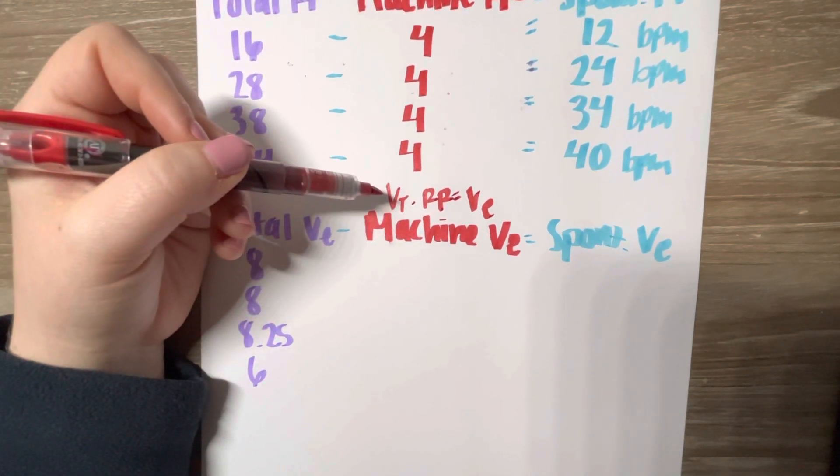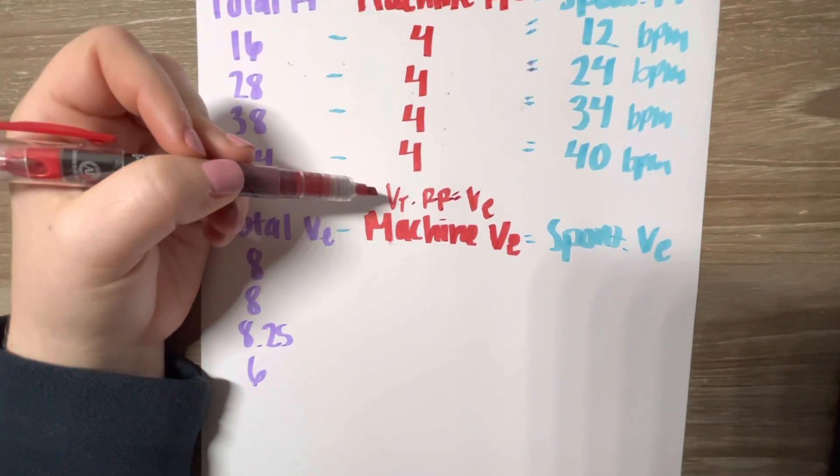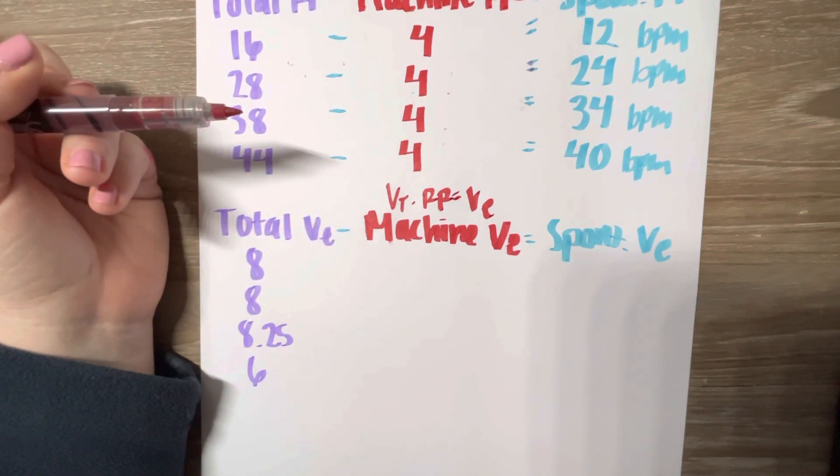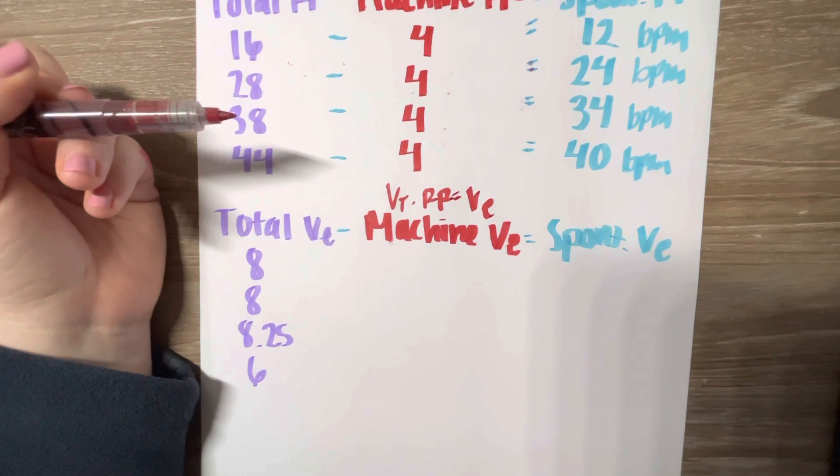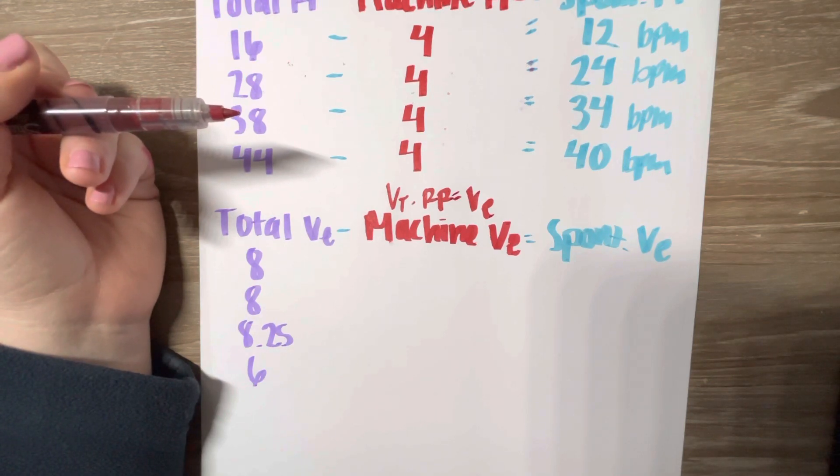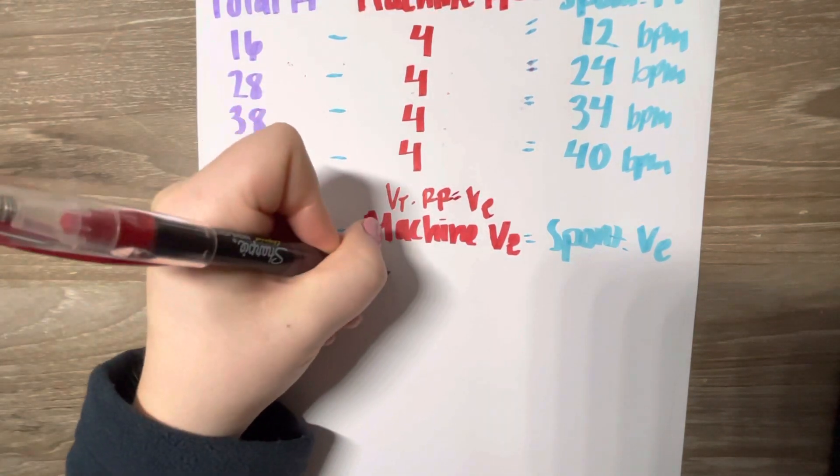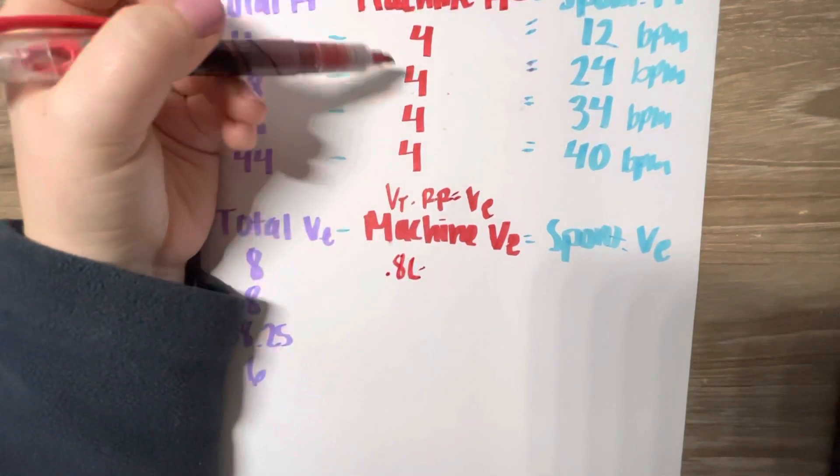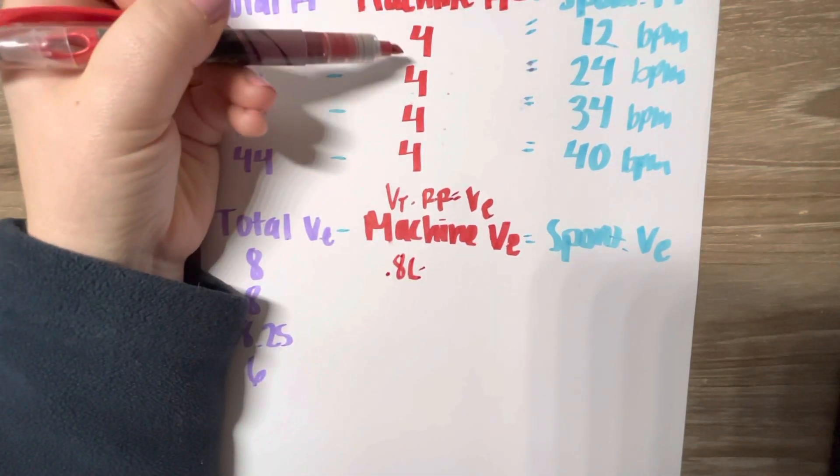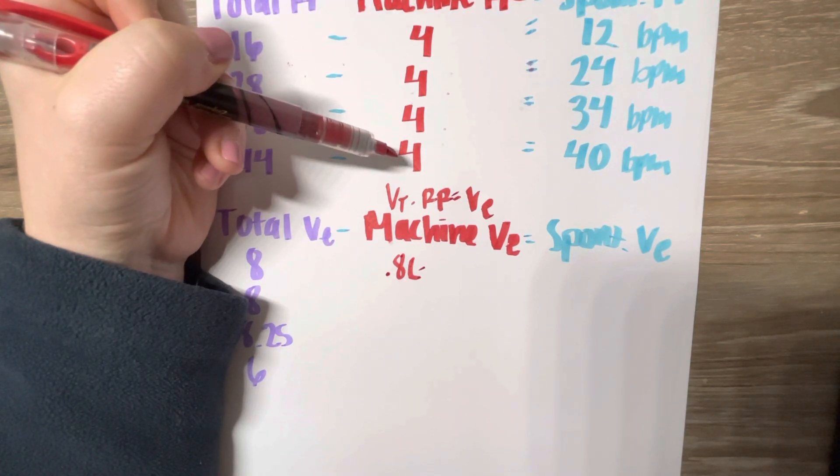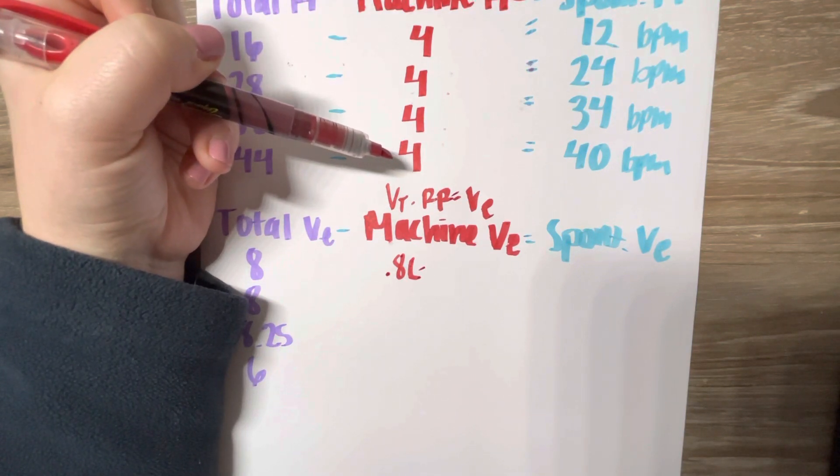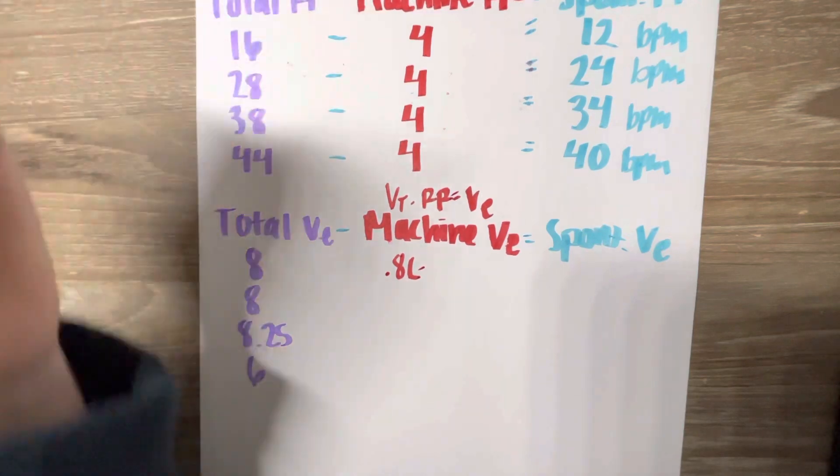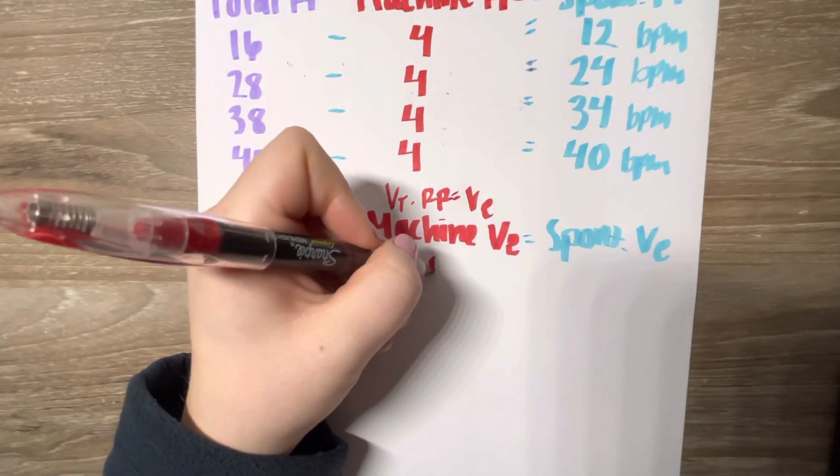So per the problem, the tidal volume given to us from the machine is 800 mL or 0.8 liters. Minute volume is usually in liters per minute, so we're just going to convert that directly to liters. So we were given that value of 0.8 liters times our respiratory rate from the machine, which is right here. And it's always 4. The tidal volume is always 800, so it is going to be the same calculation each time.